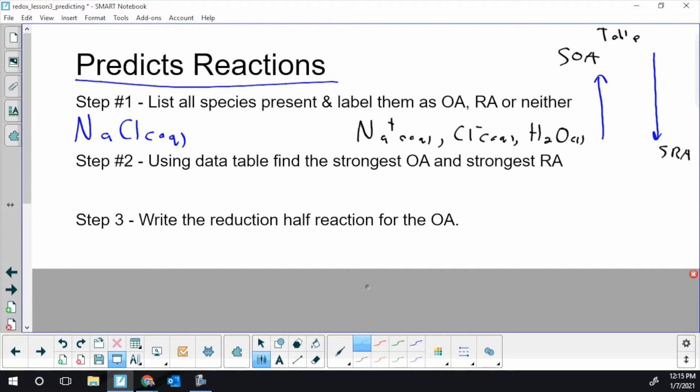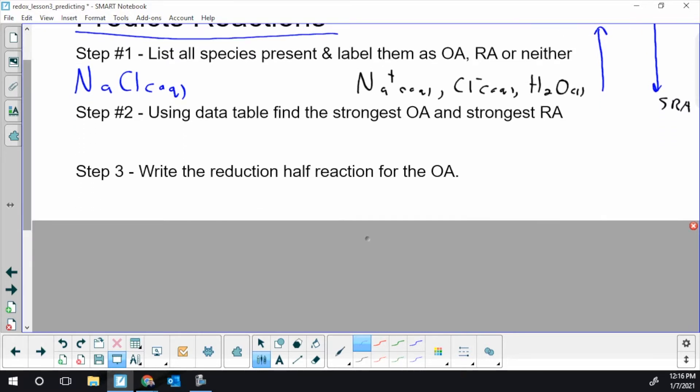Step three, kind of the same as before. We're going to take the two pieces and put them together. Before we took the acid and the base and put them together. Now we're going to write two reactions and put them together. We're going to have a reduction half reaction for that strongest oxidizing agent. And our table is built in terms of reductions. So we're going to take the reaction from our table in the forward direction. So you're going to write the reaction exactly as written in your table.